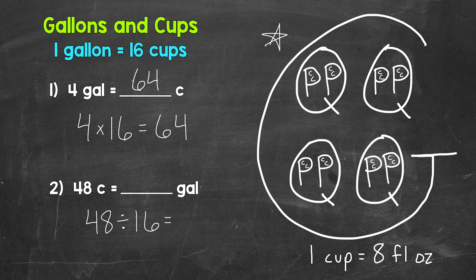48 divided by 16 gives us three. 48 cups equals three gallons. So again, when going from cups to gallons, divide by 16.